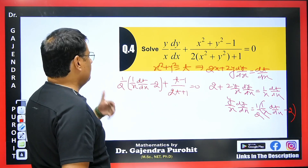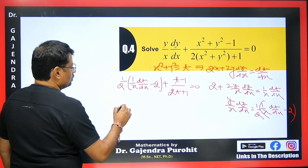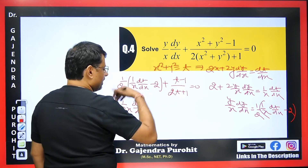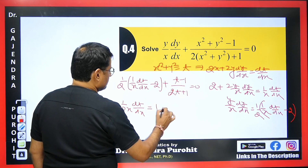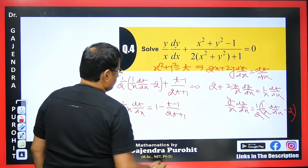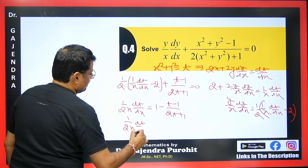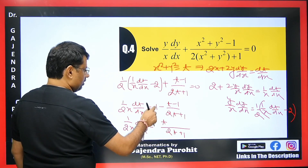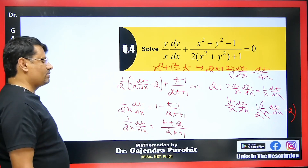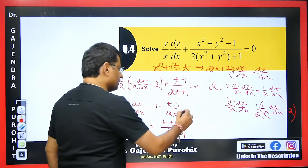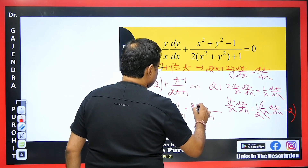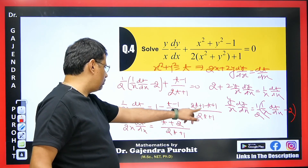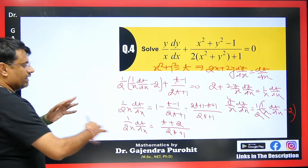Multiplying through by 2 and simplifying: (1/x) dt/dx = (t+2)/(2t+1), so after separating variables, we get (2t+1)/(t+2) dt = 2x dx. To integrate the left side, we use polynomial division: dividing 2t+1 by t+2 gives 2 with remainder −3, so (2t+1)/(t+2) = 2 − 3/(t+2).